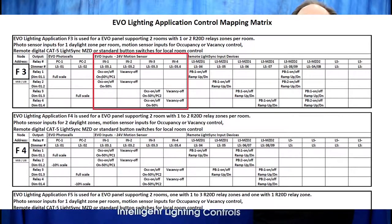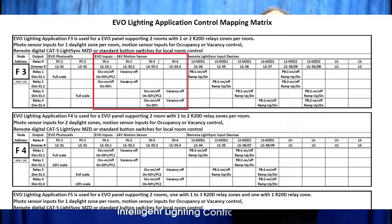Input 2 controls the same two relays but as a vacancy sensor for off-only control. These two sections are repeated for inputs 3 and 4 controlling the second room relay and dimmer loads 3 and 4.